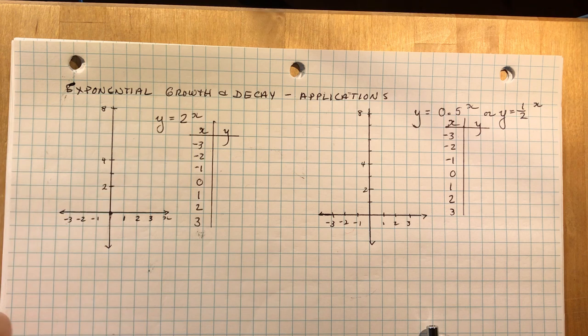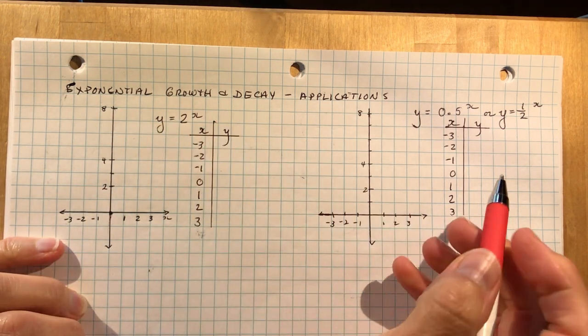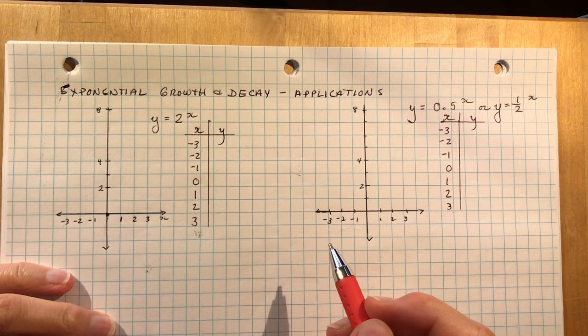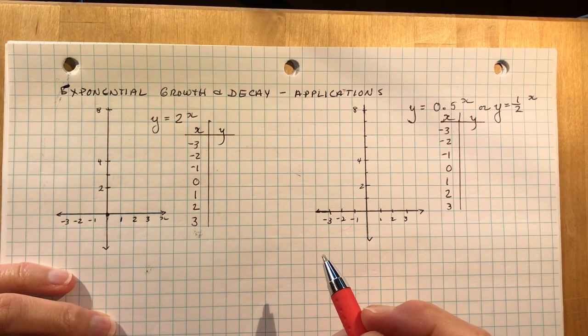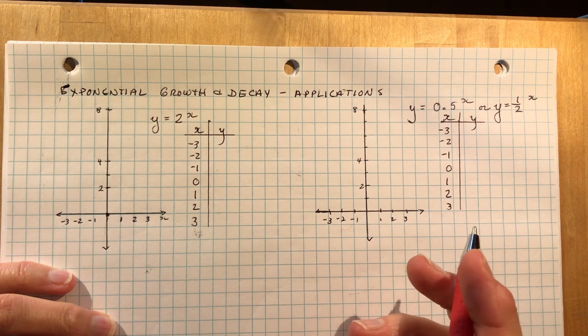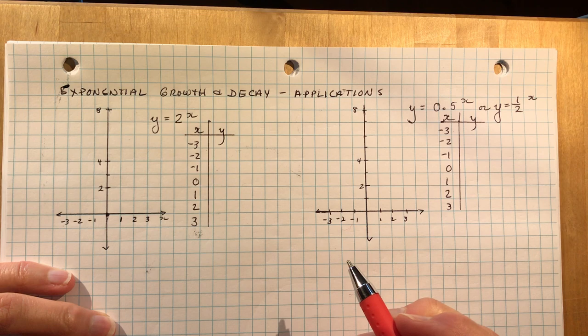So starting with 2 to the x, generally you use 2 to the x and a half to the x, basically because the numbers are manageable. You don't want to be dealing with 5 to the power of 3, which obviously is going to be 125, and it's not something your teachers can ask you to graph, hopefully.